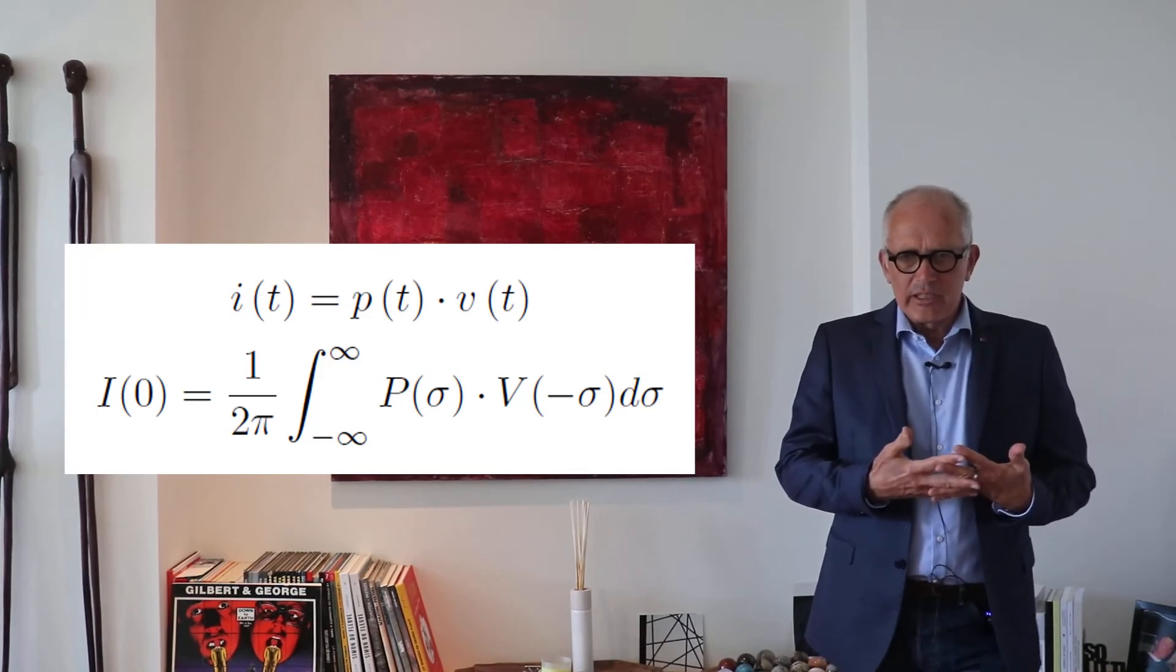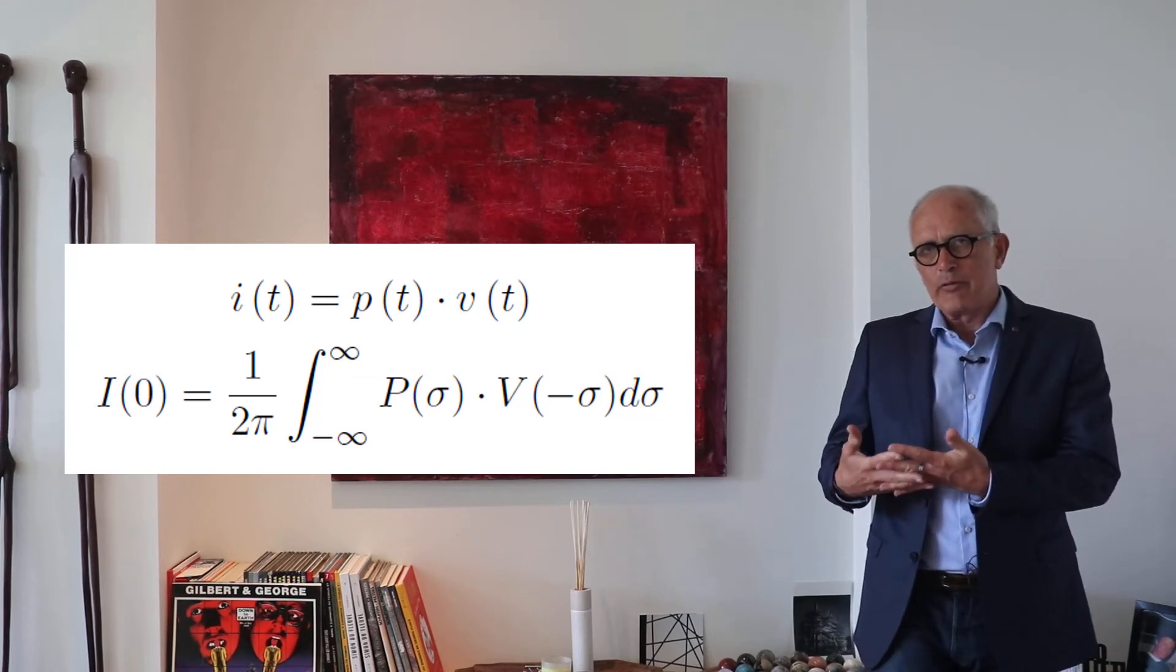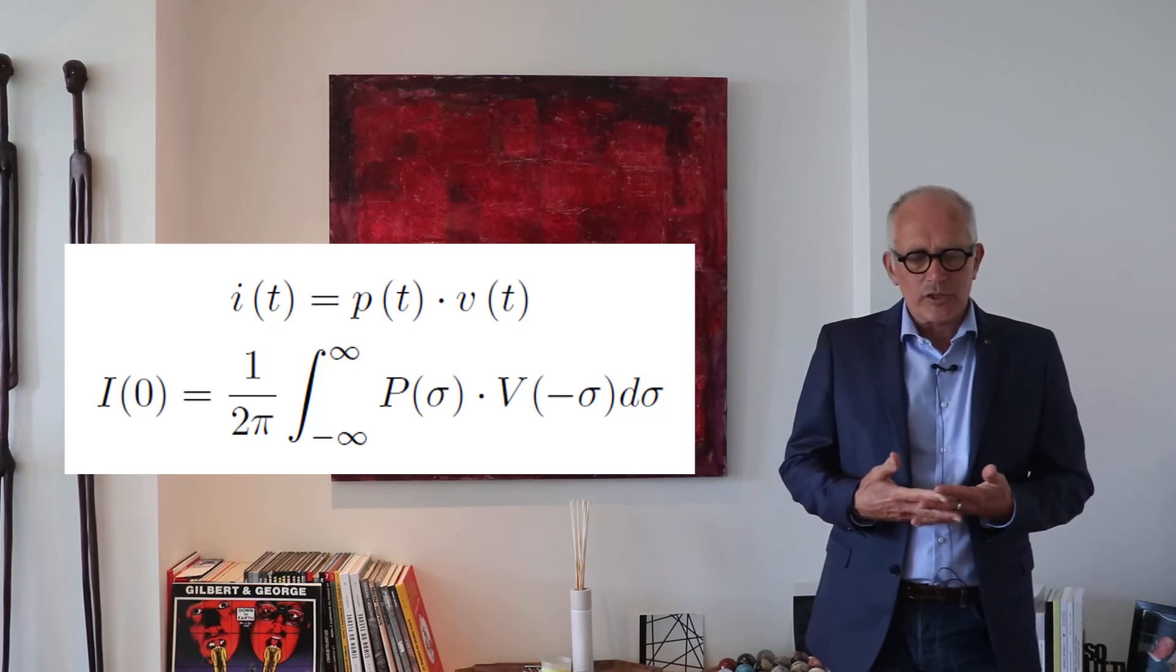The calculation of the active intensity relies on the pressure spectrum and the velocity spectrum, and these are the classical two-sided spectra in this expression.